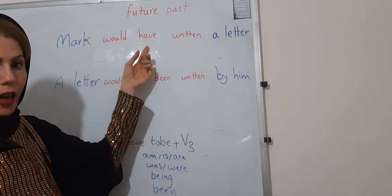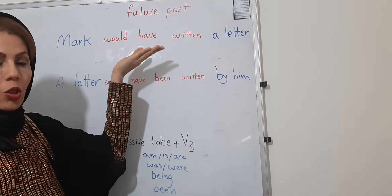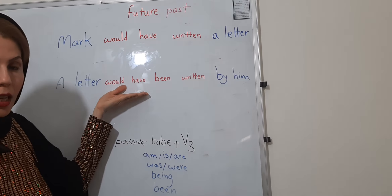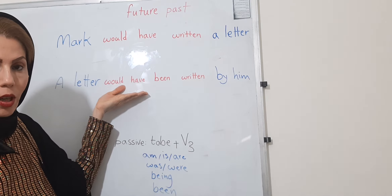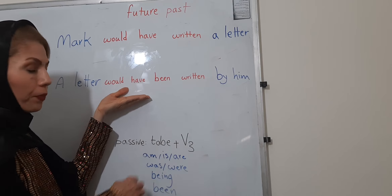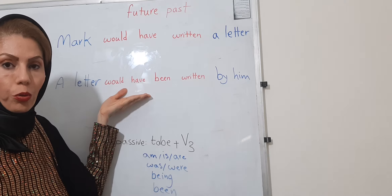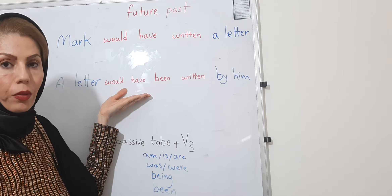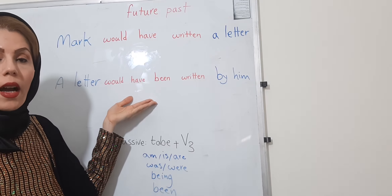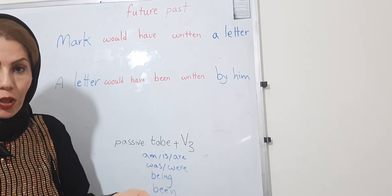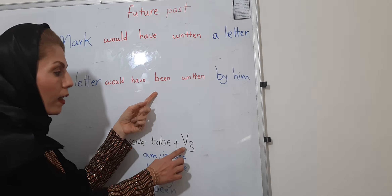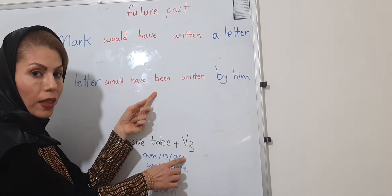You cannot change 'would have' because it shows the tense of your sentence, so you keep it in exactly the same form in the passive sentence. Then for 'to be,' I have to select a suitable form for this tense. Because this sentence is perfect, I have to use the third part of the 'to be' word, which is 'been.'